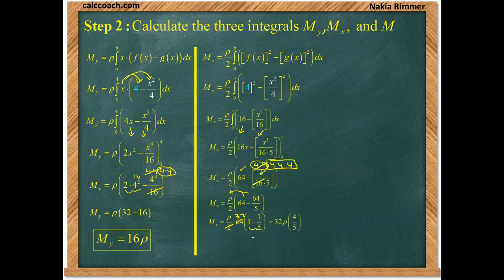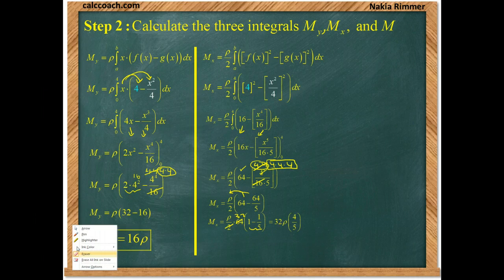And inside here, yes, we have 4 fifths. And so, the final answer then has the 32 rho times the 4 fifths. And 32 times 4 is 128.